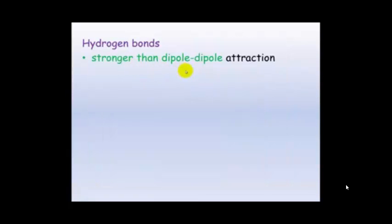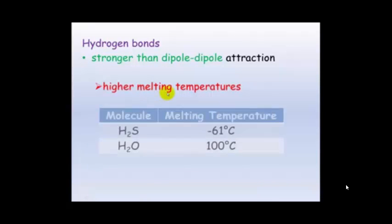So Hydrogen bonds are stronger than normal dipole-dipole attractions. And this means higher melting temperatures. And if we have a look at two different molecules here. We've got water which melts at 100 degrees Celsius.